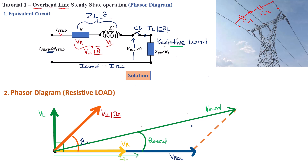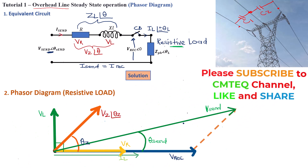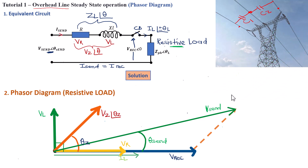Make sure you join me next time in tutorial number two of overhead line steady state operation. In tutorial two, we are going to draw the phasor diagram for a purely inductive load, and finish off with a phasor diagram for a capacitive load. Please tune in, because the phasor diagram will look quite different for a capacitive load — the current will no longer be in phase with the receiving end voltage; it will be either lagging or leading. Until next time, cheers.